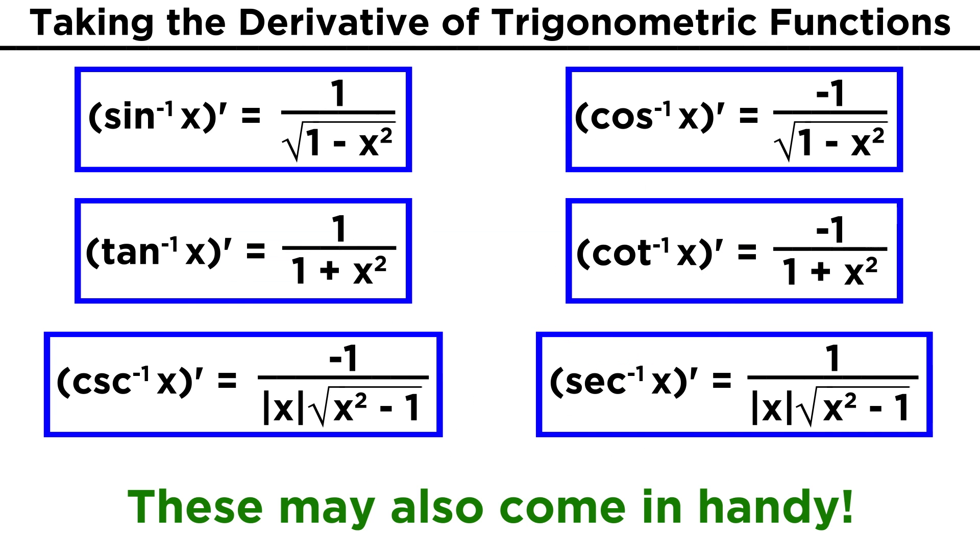Before we move on, without necessarily having to derive them, let's at least familiarize ourselves with the derivatives of the six inverse trigonometric functions. They are all listed here, and they all are in the form of one over some expression involving x squared, often under a radical. These may come in handy depending on the types of problems you are expected to solve, and we will see these again when we discuss integrals.